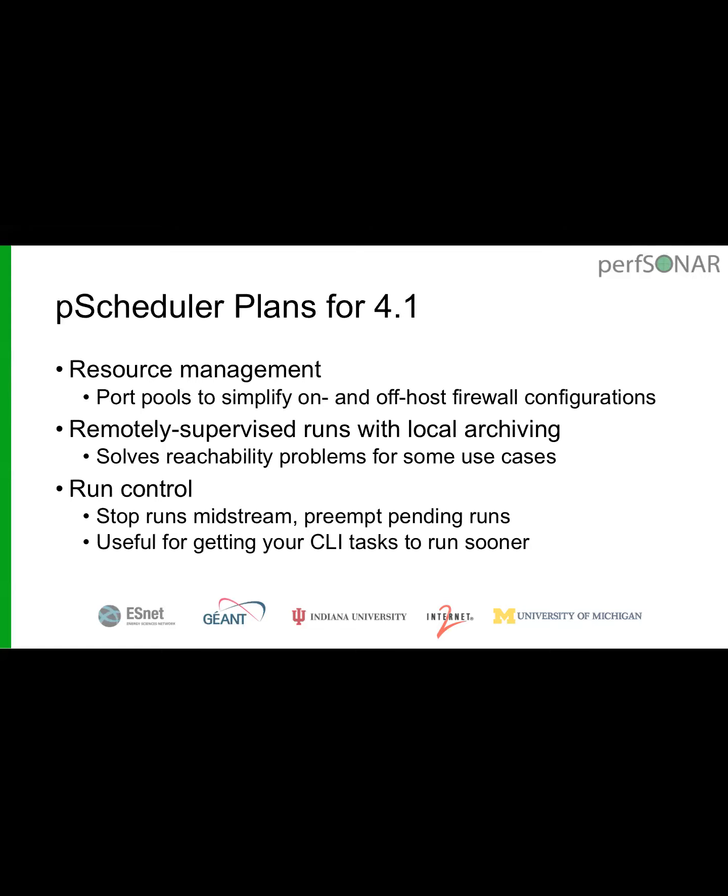Another 4.1 feature is remotely supervised runs with local archiving. Some users' testing machines can't reach their archivers, so we're looking at a way to submit a task to a machine while also submitting it elsewhere to run, then collecting results and archiving locally — essentially a firewall bypass within certain limits. We're also looking at better run control: currently you can cancel a task to cancel all future runs; we want to also be able to stop a run midstream and preempt pending runs, for example when someone running CLI tests doesn't want to wait for the queue.